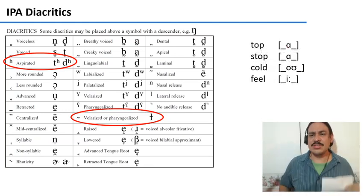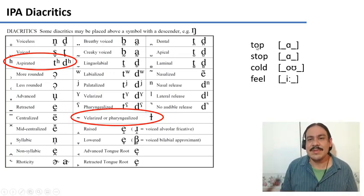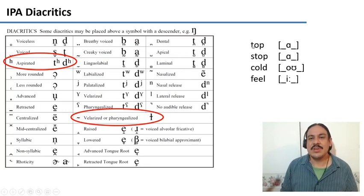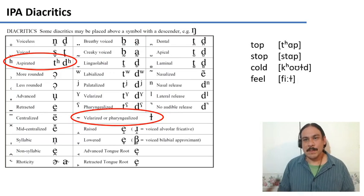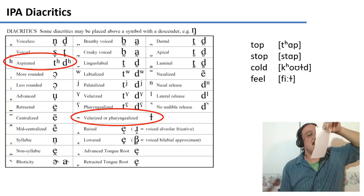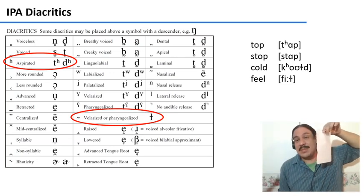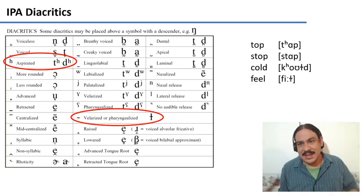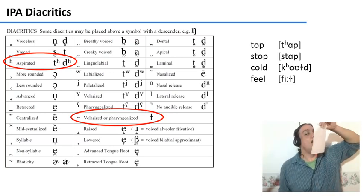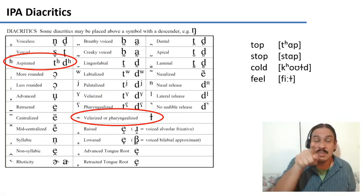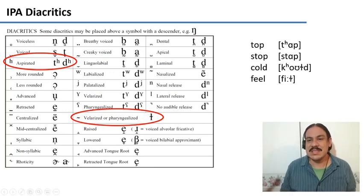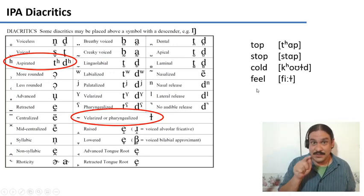With this new information, try to transcribe these English words — there can be more than one consonant per word. 'Top' has an aspirated T and then a P. 'Stop' has a regular T with no aspiration. In 'cold' you get an aspirated K and then a dark L — if you pronounce it slowly, the tip of your tongue is not moving towards the alveolar ridge. Same in 'feel' — the tip of your tongue is not touching the alveolar ridge.